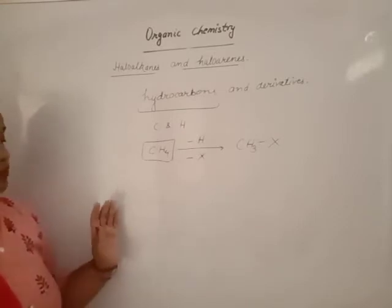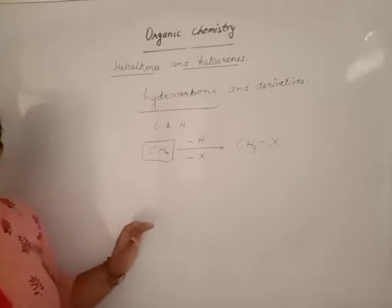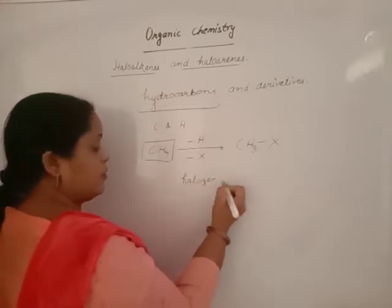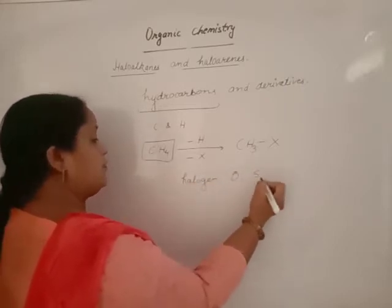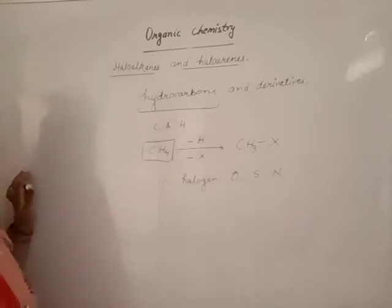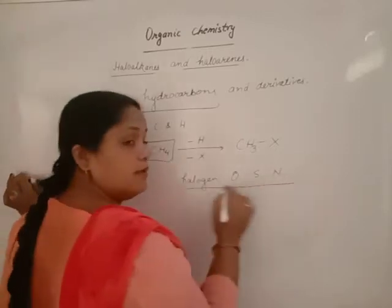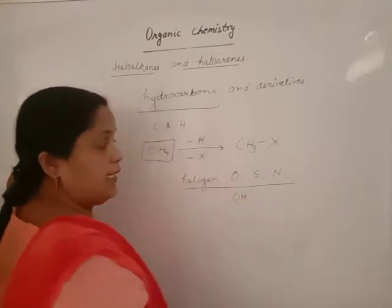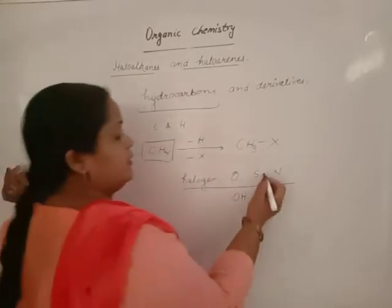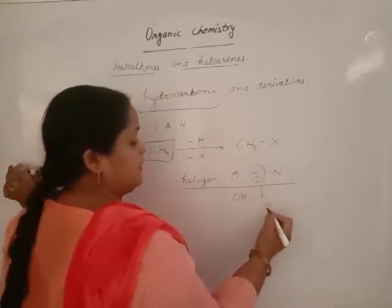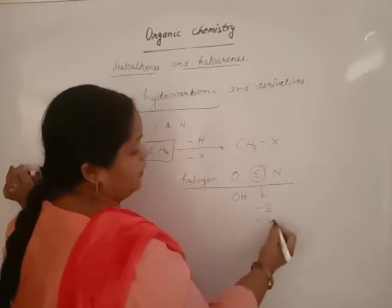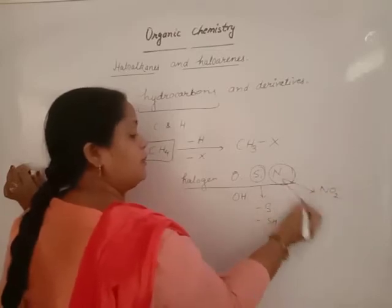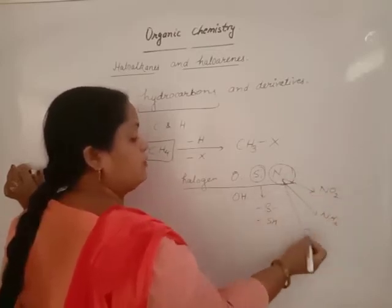Heteroatom means atoms that are not carbon or hydrogen — either halogen, oxygen, sulfur, nitrogen, etc. These heteroatoms are used as functional groups: oxygen is used as OH, aldehyde, or ketone; sulfur is present in the form of thioethers or thiols; nitrogen may exist as nitro, amine, or amide.